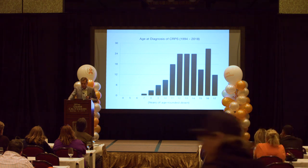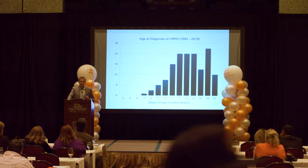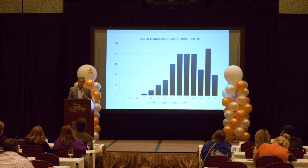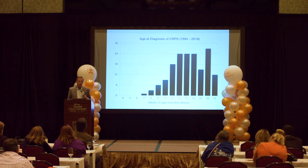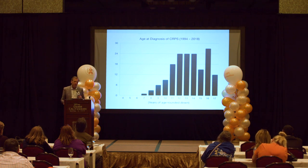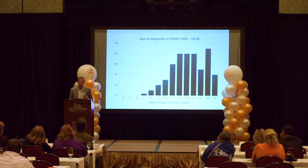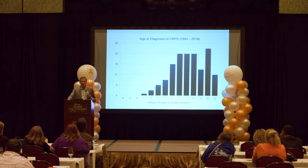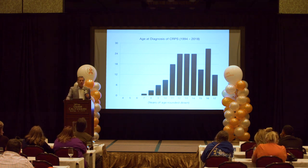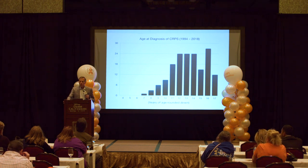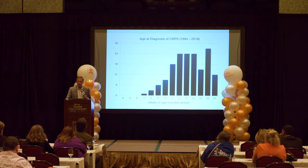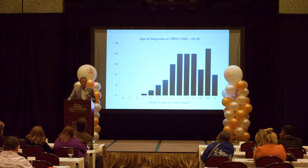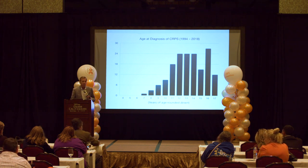What I want to talk about today are some differences between children and adults with CRPS. One has to do with drug management, which I'll save for last. Another obvious difference is coping skills and motivation. Children are not born with coping skills — these are learned throughout childhood, adolescence, and adulthood. Most children, especially young ones, are not endowed with great coping skills or the motivation to do the hard work required to recover from CRPS.